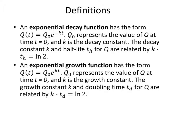An exponential growth function has the exact same form: Q(t) = Q₀e^(kt). The only difference is the positive exponent—negative is decay, positive is growth. Q₀ still represents the value at time 0. k is now the growth constant, and the growth constant k and doubling time t_d for Q are related by k·t_d = ln 2. A growth function has a positive exponent, decay has negative. If it's decaying, half will be left after a certain time. If it's growing, it'll double.